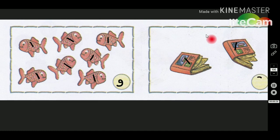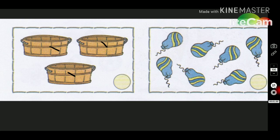હવે ચોપણી ગણીશું - એક અને બે, તો અહીં આપણે બે લખીશું. આ ત્રાણ છે, તો ત્યાં આપણે ત્રાણ લખીશું. આપણે ફૂગ ગણીએ - એક, બે, ત્રાણ, ચાર, પાંચ, છ, સાત - કેટલા ફૂગ છે? સાત. ત્યાં આપણે સાત લખીશું.